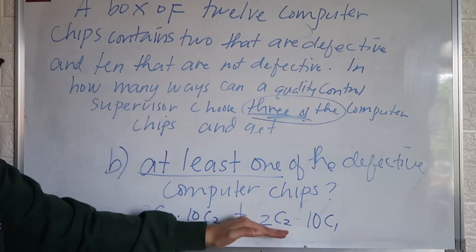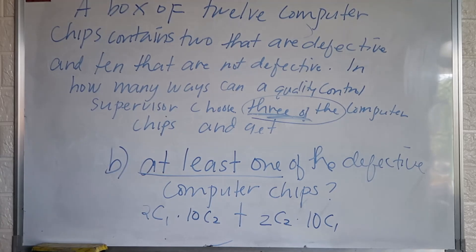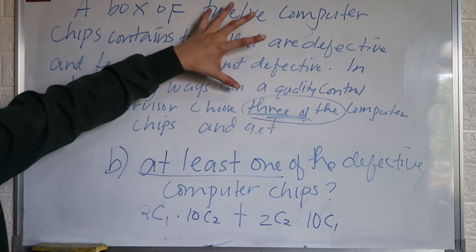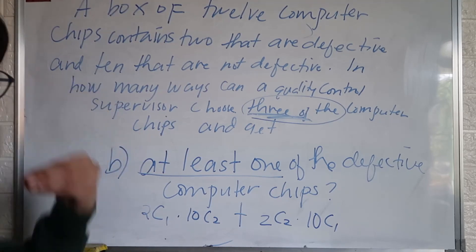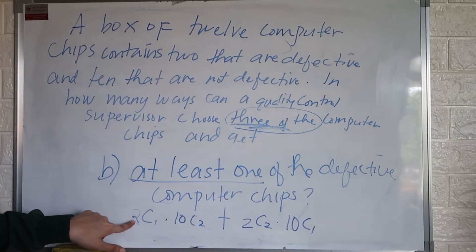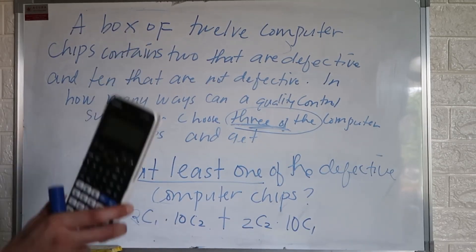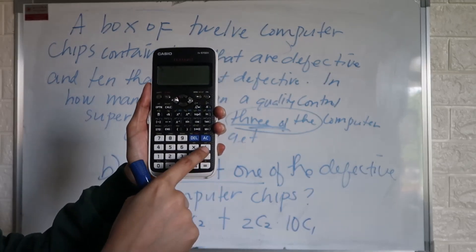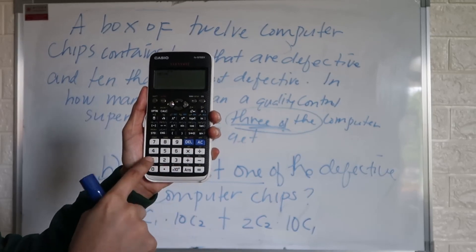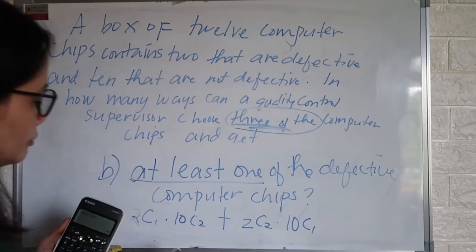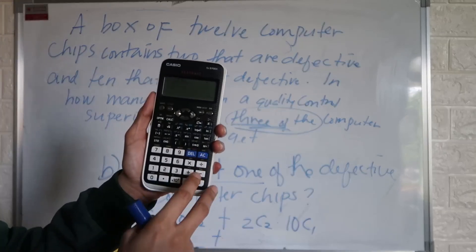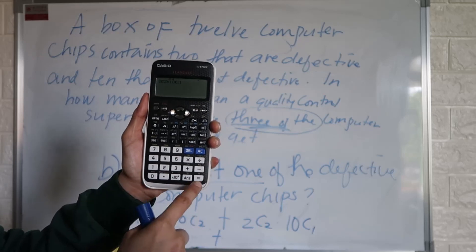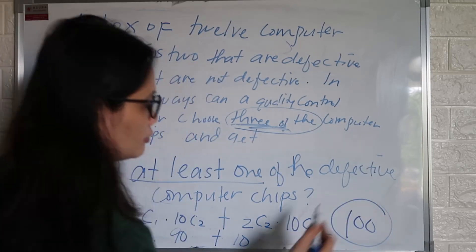We go up to two only because there are only two defective chips. Even if we choose three computer chips, the maximum number of defective ones is two. Using the calculator: press 2, shift, combination symbol, 1, multiplied by 10, shift, combination symbol, 2 — you get 90. Plus 2, shift, combination symbol, 2, multiplied by 10, shift, combination symbol, 1 — you get 10. So the answer is 100.